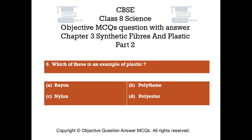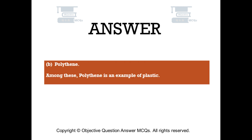Question number 6. Which of these is an example of plastic? Option A - rayon, Option B - polythene, Option C - nylon, Option D - polyester. The right answer is Option B, polythene. Among these, polythene is an example of plastic.